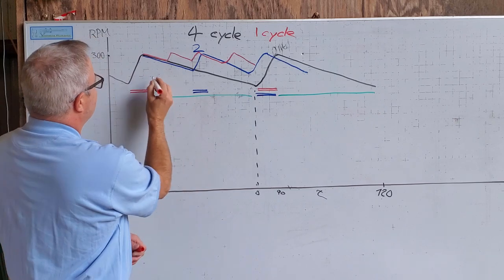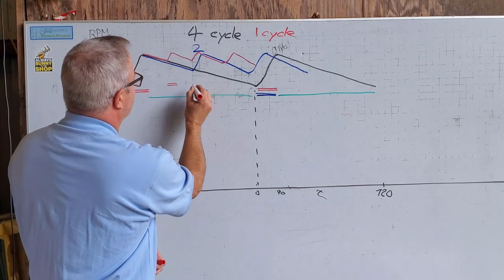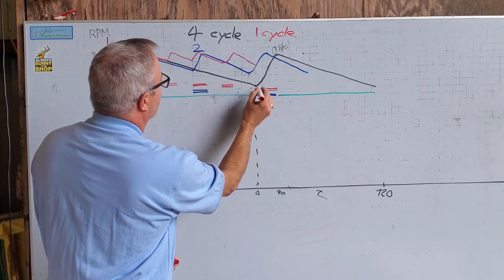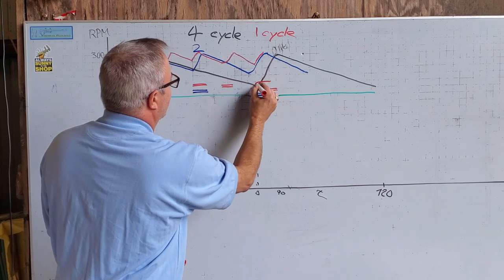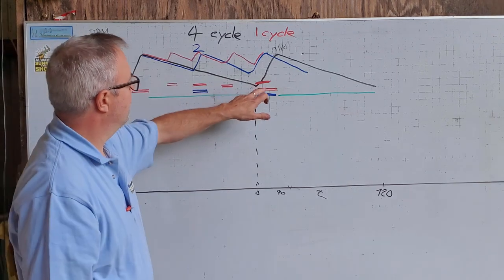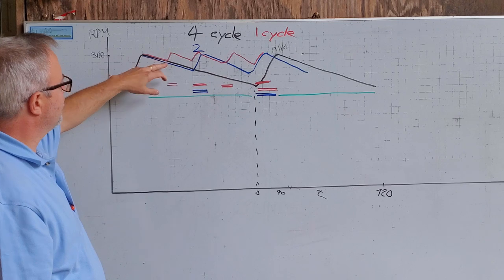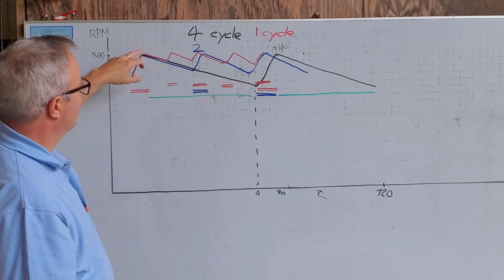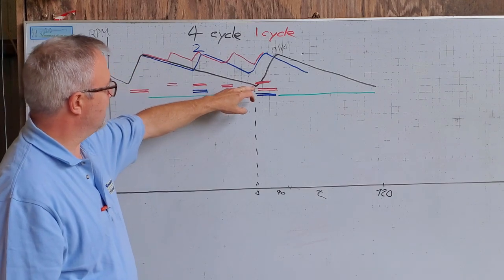So steam engine, we're admitting energy to the flywheel here, here, here, and again here. Twice as often as a two-cycle, and every time we do this we reduce the amplitude, the variation of maximum RPM of the flywheel to minimum.